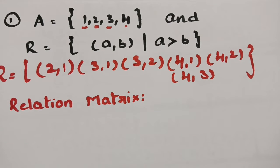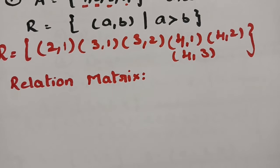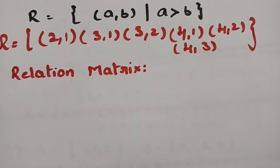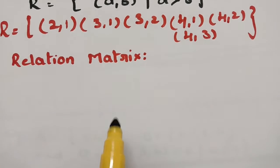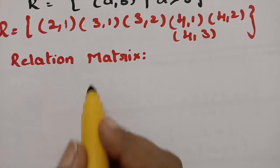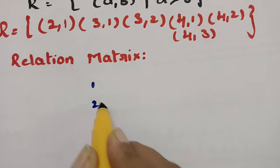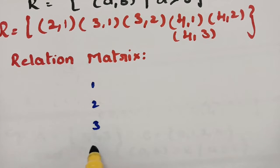The set of all ordered pairs forms a relation. Now this relation should be represented in two kinds — the first one is the relation matrix, and the next one is a digraph. So how to represent this in the matrix notation? The relation ordered pairs are very clear and flashing on the screen.